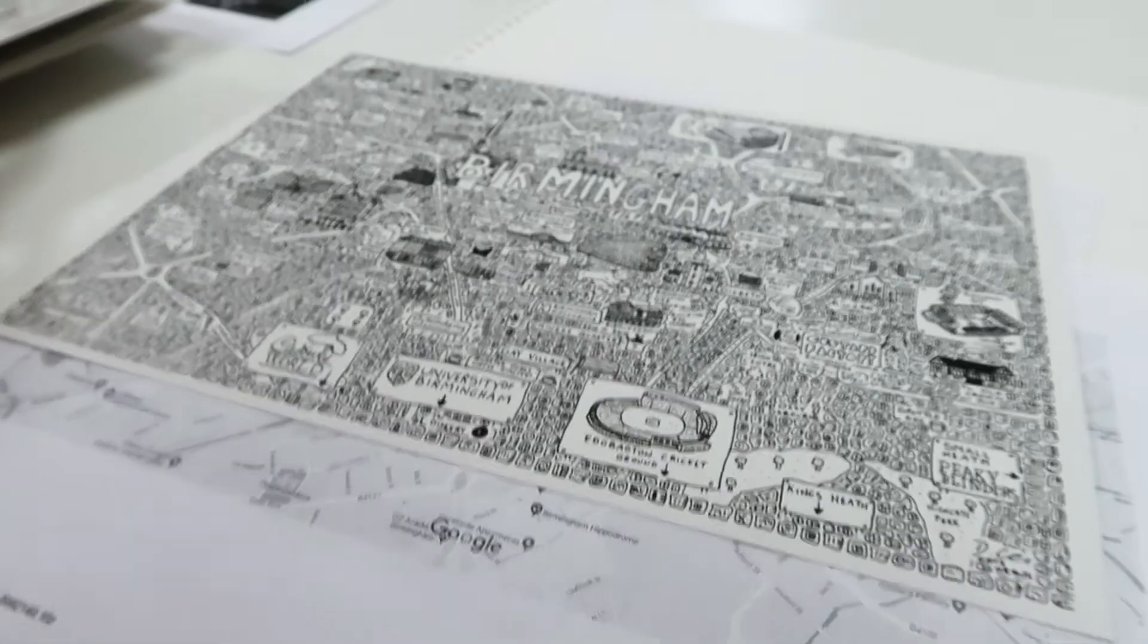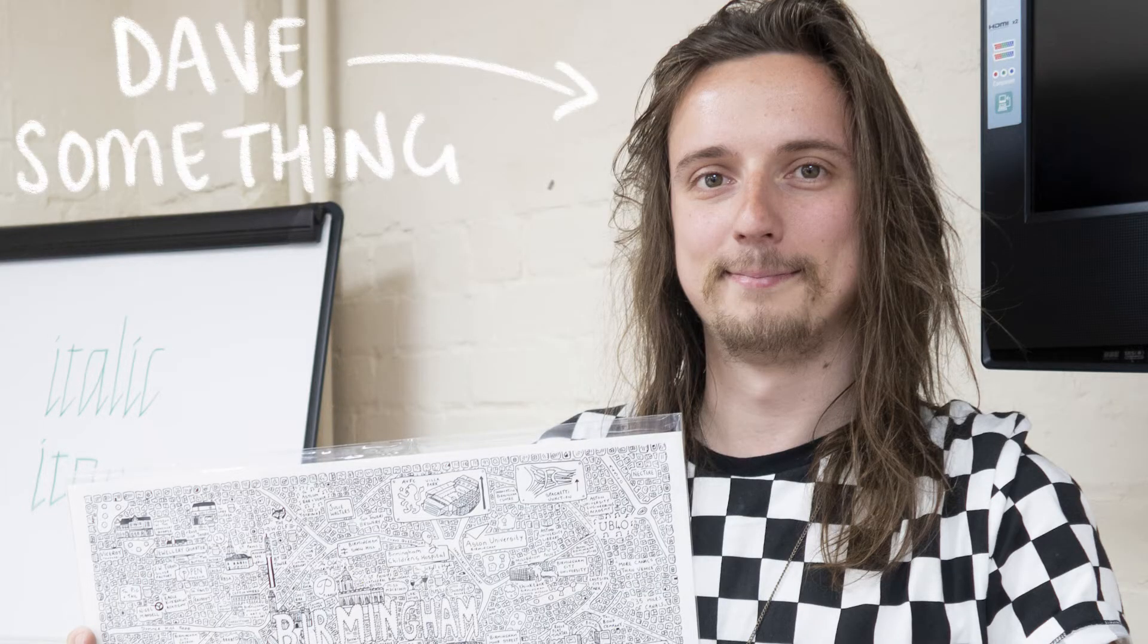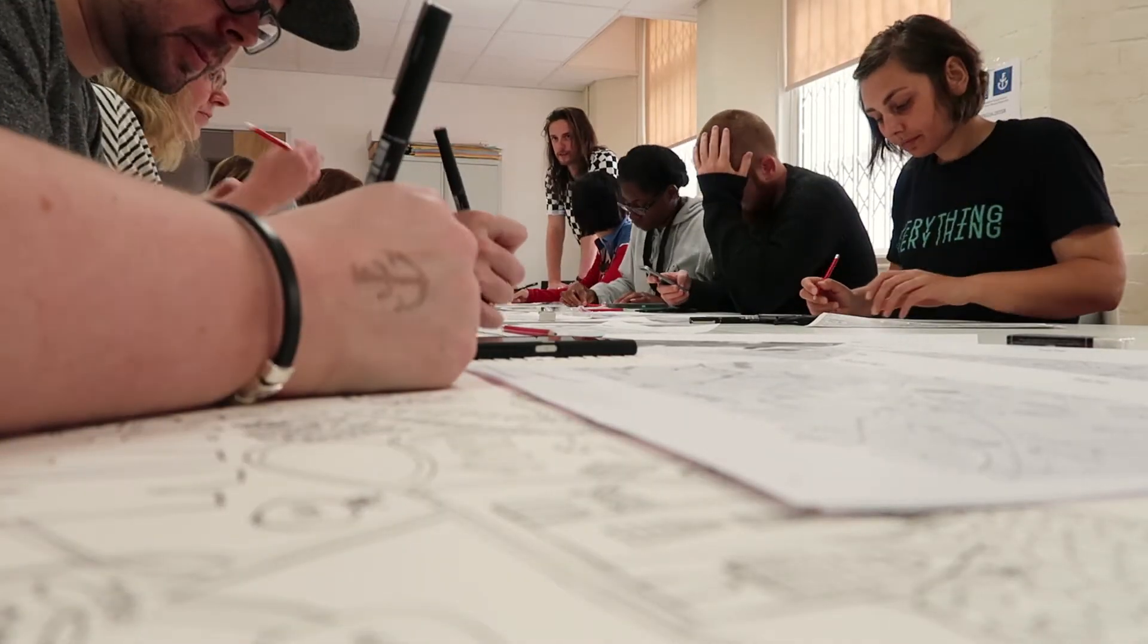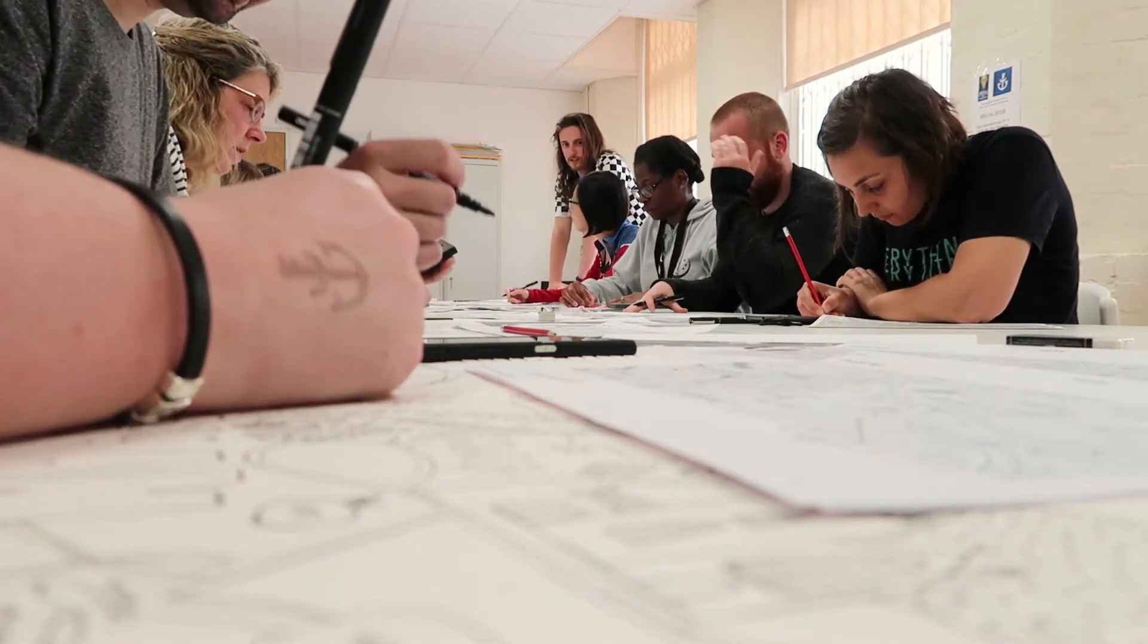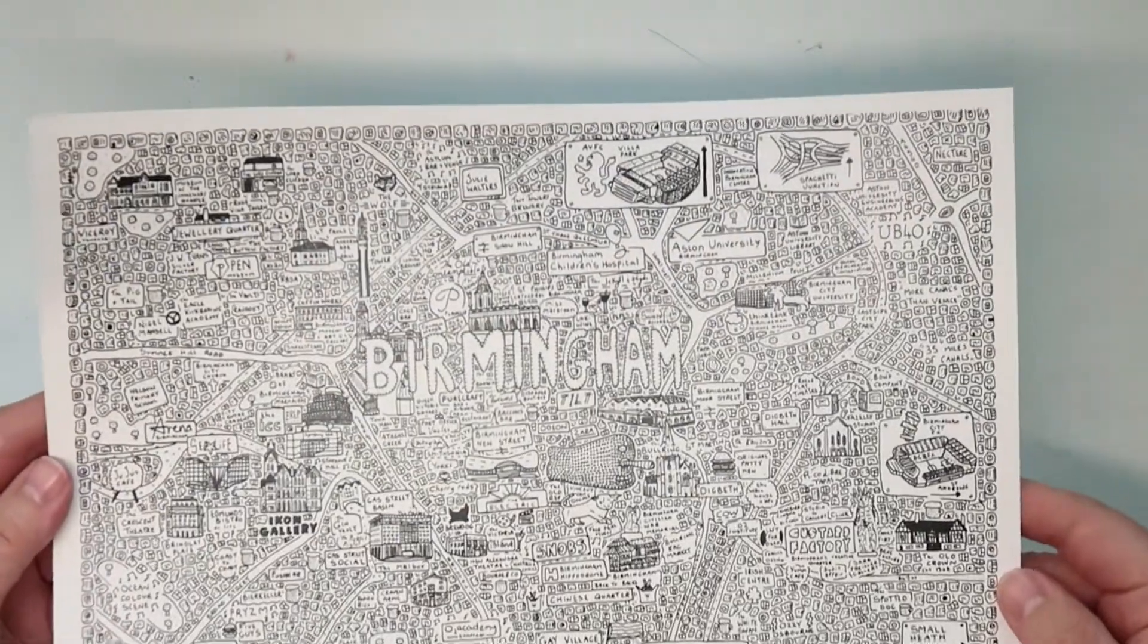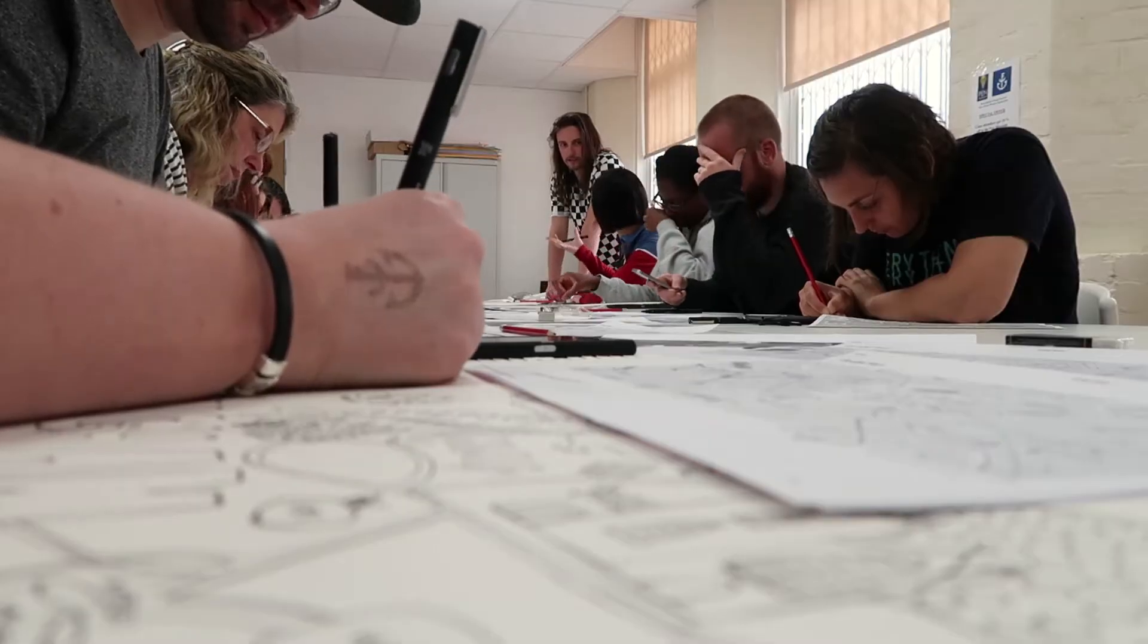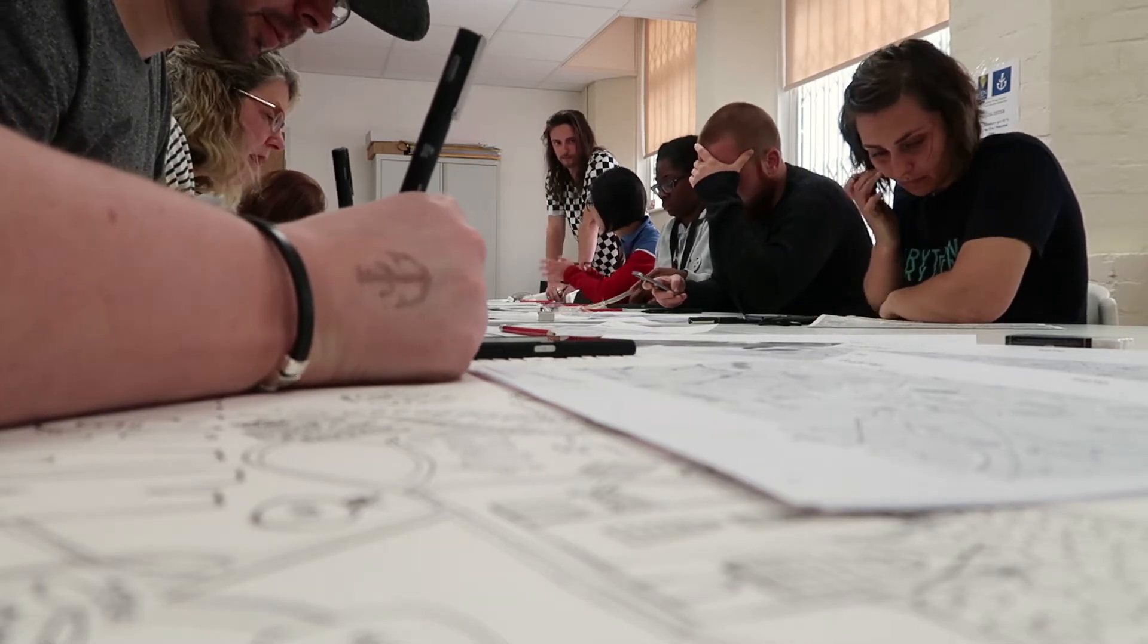And then one of the other really cool things that we did is this workshop with a guy called Dave, he goes as Dave Draws, and he basically goes around and he does all these really crazy doodle maps of different places. So this is an example of one of the maps he's drawn.